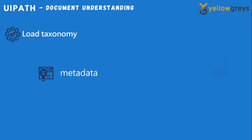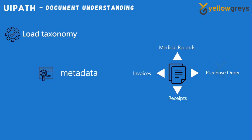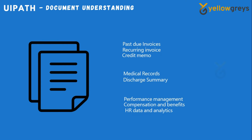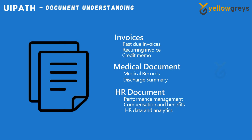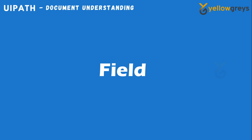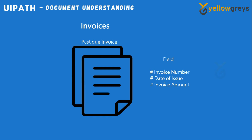A taxonomy is a collection of document types that must be handled by a business process. Examples of document types include invoices, medical records, purchase orders, and receipts. A document type usually has a collection of fields in addition to a name, group, and category for easy handling. A field is one piece of data that should be located and recorded from a given document type — for example, invoice number, date of issue, and invoice amount.